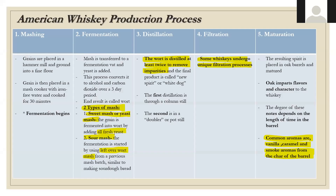For the American whiskey production process: we start with mashing, where grains are placed in a hammer mill and ground into a fine flour, placed into a mash cooker with iron-free water and cooked for about 30 minutes, which kicks off fermentation. The mash is then transferred to a fermentation vat and yeast is added. The process converts sugars to alcohol and carbon dioxide over about a three-day period, and the end result is called wort.